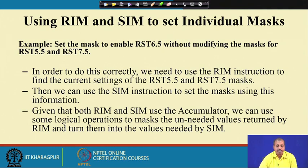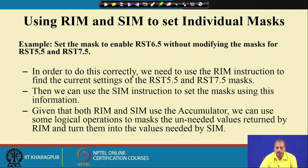Here is an example: set the mask to enable RST 6.5 without modifying the masks for RST 5.5 and 7.5. What we want is that the current settings for 5.5 and 7.5 continue, and only the RST 6.5 interrupt should be enabled. First, we execute a RIM instruction to find the current settings of the 5.5 and 7.5 masks, then use the SIM instruction to set the masks using this information, applying logical operations to mask unneeded values.